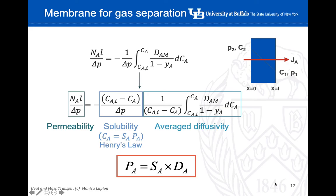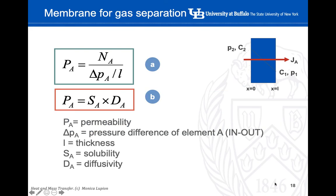Therefore, we can define the mass transfer equation for membranes: permeability equals the solubility of element A times the average diffusivity of element A. This equation is critical — we're going to use it extensively for solving membrane problems. In summary, the two main equations for membranes are: the permeability definition relating permeability to molar flux, and permeability equals solubility times average diffusivity.